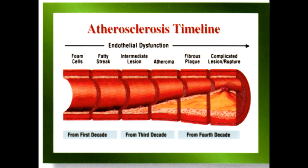Throughout your life, essentially everyone will get atherosclerosis — the only difference is at what stage. You can actually start to get it as young as five to ten years old in all of your vessels. When it occurs in excess, it causes a narrowing of your arteries, and eventually these plaques can even rupture. Their rupture can cause formation of thrombosis, which causes further narrowing of the lumen, reducing blood flow to the tissue being perfused, and all of this leads to infarction of different tissues.